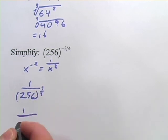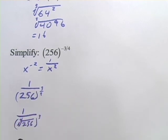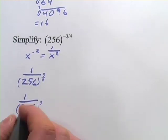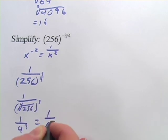So 1 over the 4th root of 256, that quantity cubed. And that is 1 over 4 cubed, which is 1 over 64.